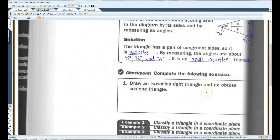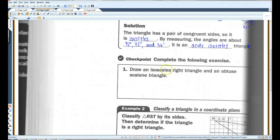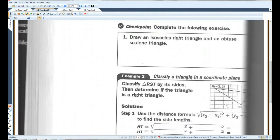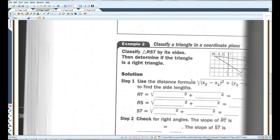Okay. All right. I'll let you guys do this one. Example 2. Classify triangle RST by its sides. Then determine if the triangle is a right triangle. Okay. I'm going to draw in the part that got cut off.